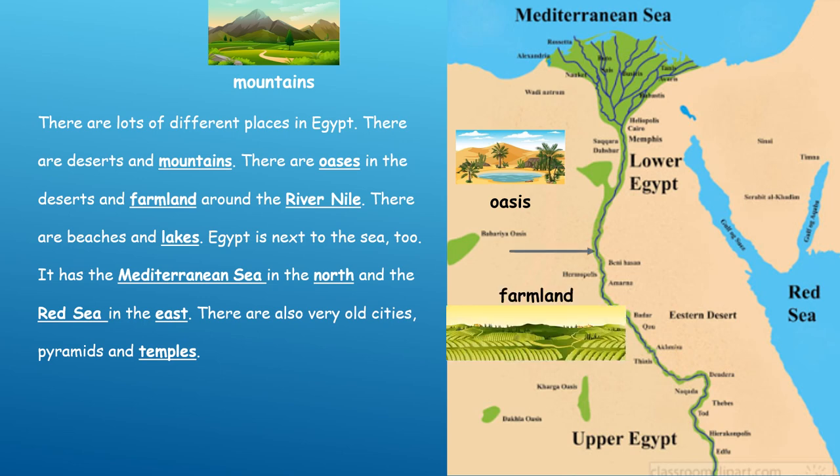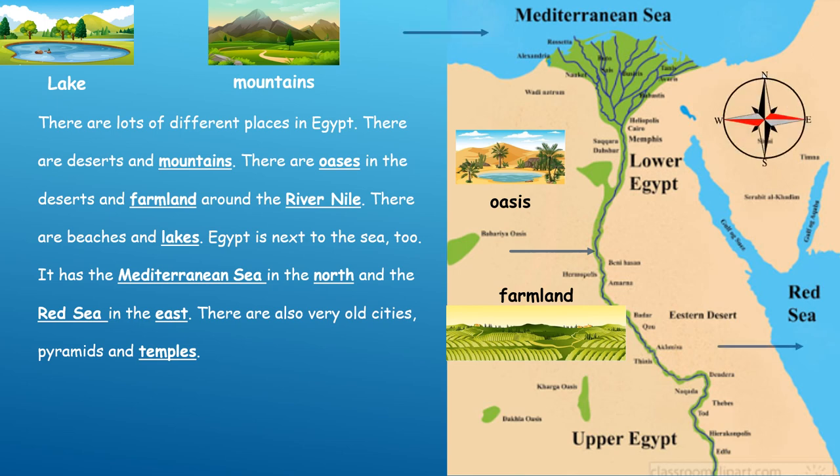And there is farmland around the River Nile. As we can see, around the River Nile there are beaches and lakes. Egypt is next to the sea too, and it has the Mediterranean Sea in the north and the Red Sea in the east.